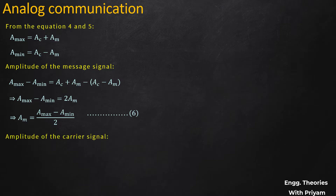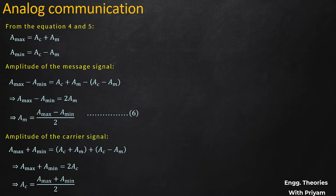For the amplitude of the carrier signal, we add Equations 4 and 5: A_max + A_min = (Ac + Am) + (Ac − Am) = 2·Ac. Therefore the amplitude of the carrier signal Ac = (A_max + A_min) / 2. This is Equation 7.